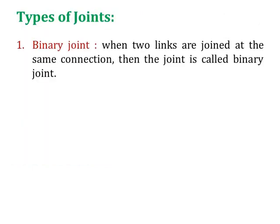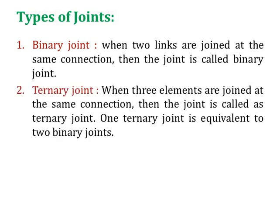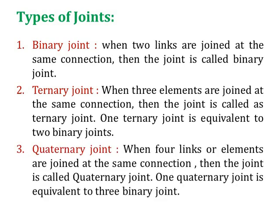Now we will see types of joints. Binary joint: when two links are joined at the same connection, the joint is called a binary joint. Ternary joint: when three elements are joined at the same connection, it is called a ternary joint. One ternary joint is equivalent to two binary joints. Quaternary joint: when four links are joined at the same connection, it is called a quaternary joint. One quaternary joint is equivalent to three binary joints.